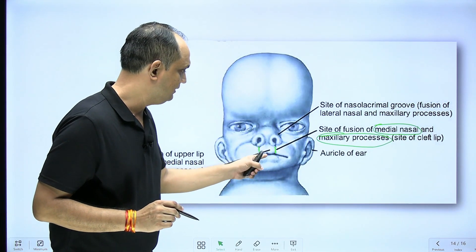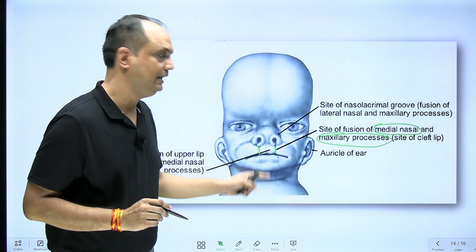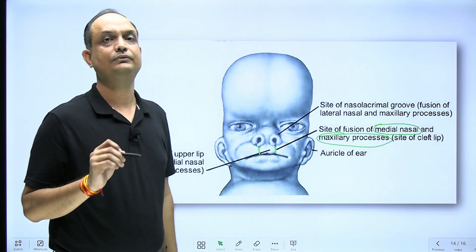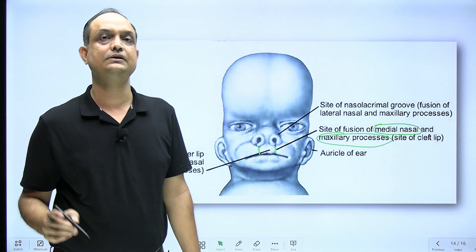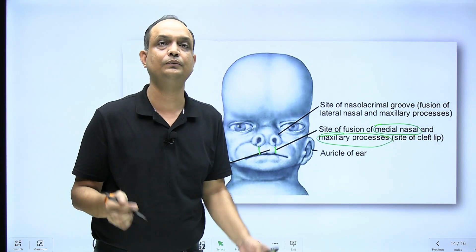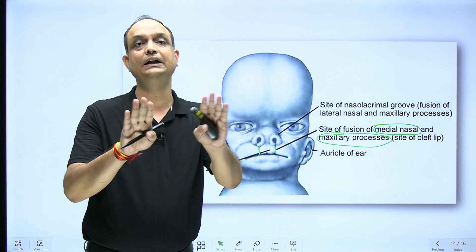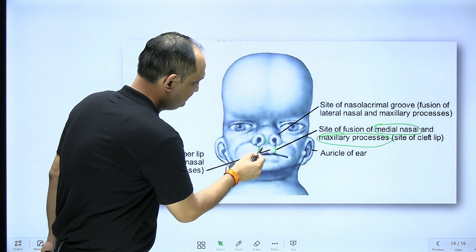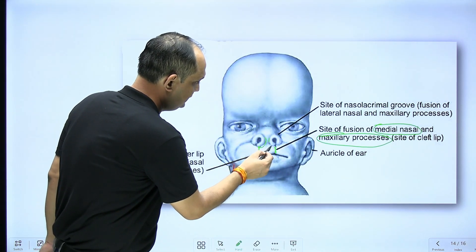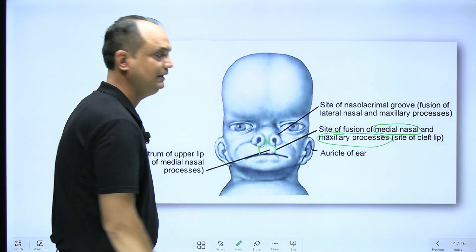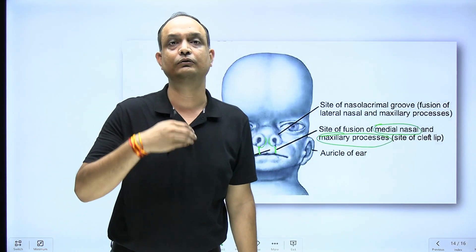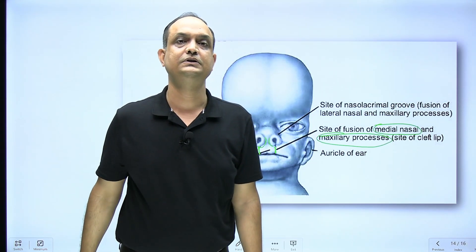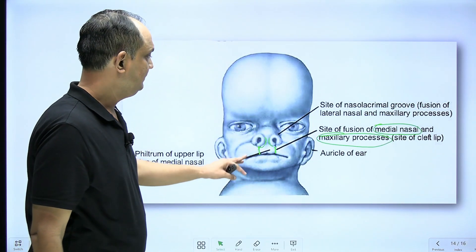Sometimes you will have midline cleft lip. Midline cleft lip occurs when there is failure of fusion of both medial nasal processes. If these medial nasal processes fail to fuse in the midline, the child is born with a midline cleft lip, which is known as a hare lip.